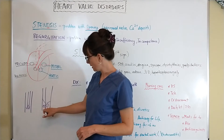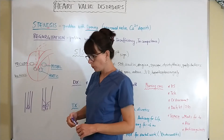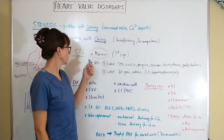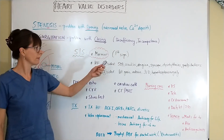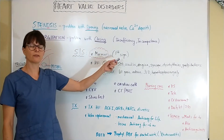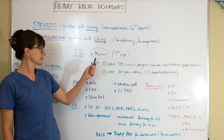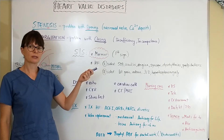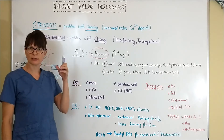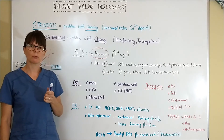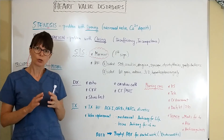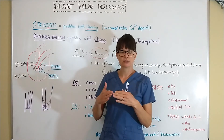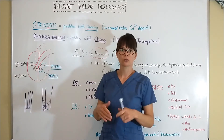This turbulence can be heard with a stethoscope, which brings us to signs and symptoms. Many times the first sign of a valve problem is an audible murmur detected during a routine physical or exam — that murmur represents the turbulent blood flow as blood leaks through a valve that is not opening or closing appropriately.